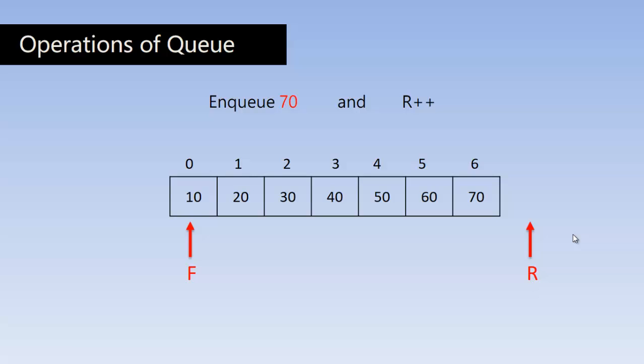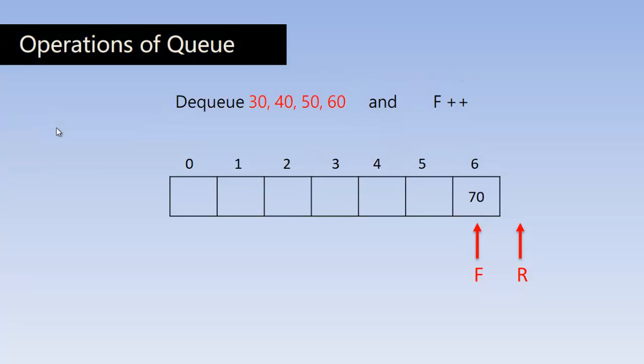So now let us look at the dequeue operations. And when we dequeue 10, F will be incremented to the next position, that is now F is pointing to 20. When we dequeue 20, that means deleting the elements from the queue, it will point to 30. So when we dequeue 30, 40, 50 and 60, this is the status of the queue.